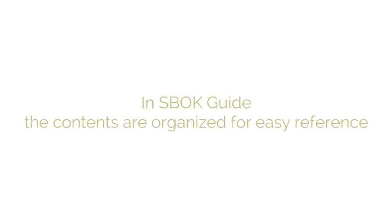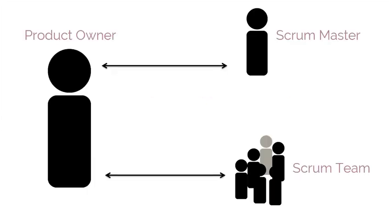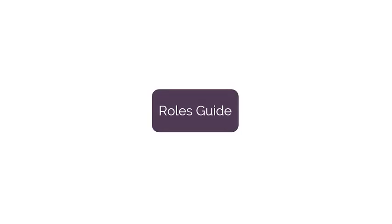In the SBOK Guide, you will find that the contents are organized for easy reference by the three Scrum Core Team Roles: that of the Product Owner, Scrum Master, and the Scrum Team. The content for each Scrum Core Team Role is identified in the Roles Guide section. A Roles Guide provides direction regarding the relevance of each section in the chapter to the Scrum Core Team member.